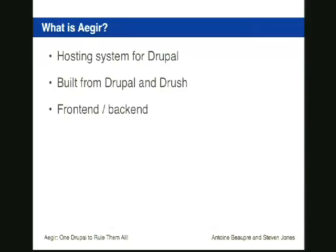Eiger has a front end and a back end. The Drupal site is the front end, and its primary function is to manage the back end. The back end manages the servers — and that separation between front end and back end is a key concept in Eiger. You can use just the back end if you want, but the front end is quite nice, so there's no reason not to. You can also automate things by talking directly to the back end, with the front end and back end communicating together.